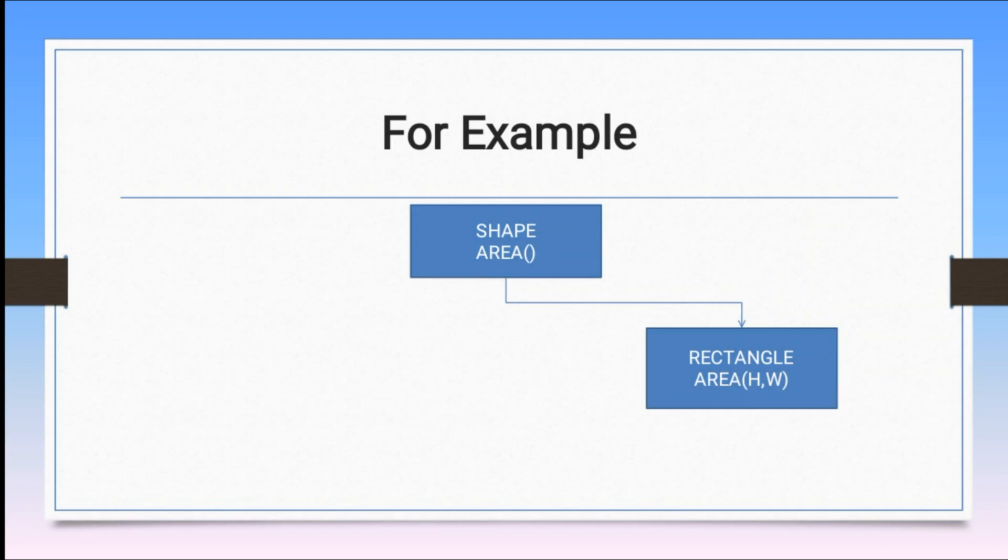We have one class, method area name and two parameters we have passed. Similarly, we have another example which is circle. Circle has area with two parameters like pi and r. But here we have a scenario where we have two parameters passed, so rectangle has two integers, but in circle here there is a float value and integer value.